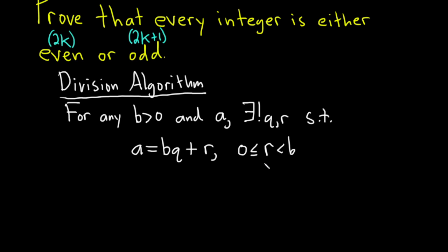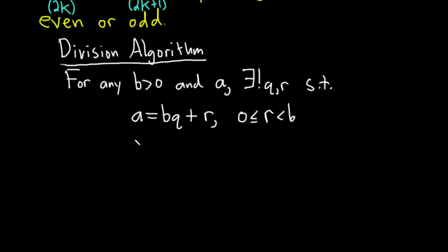So r is called the remainder. r is basically the remainder you get when you divide a by b. So let's go ahead and prove our question here.